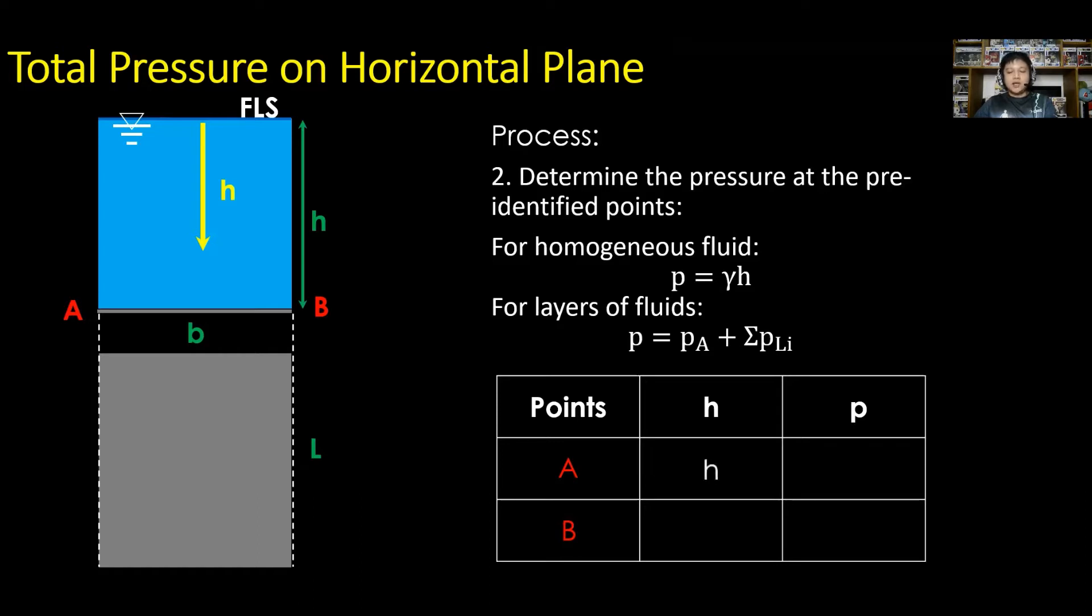At point A, H is equal to h. While at point B, H is equal to h as well. For P at point A, P is equal to gamma times h. At point B, gamma times h also.